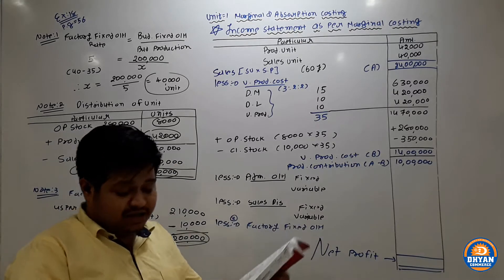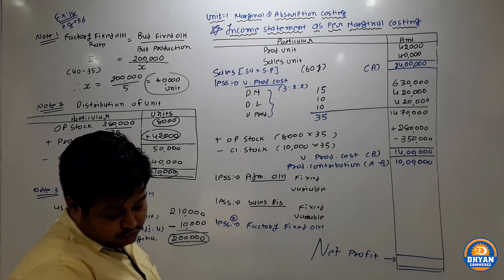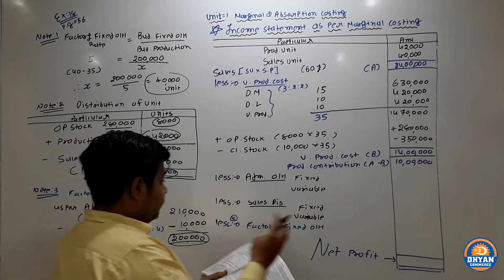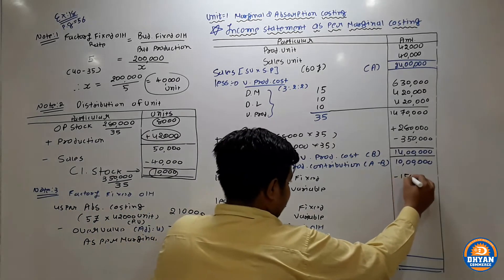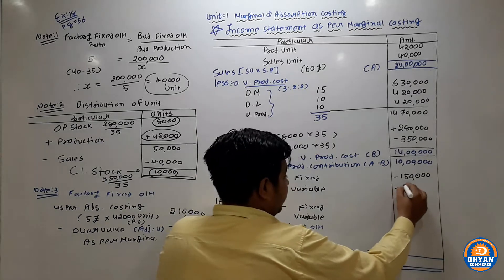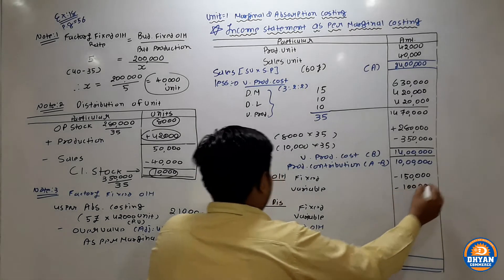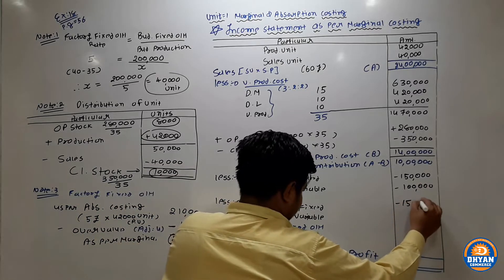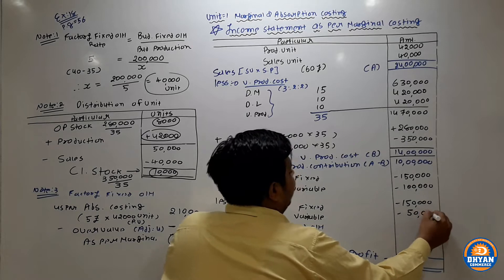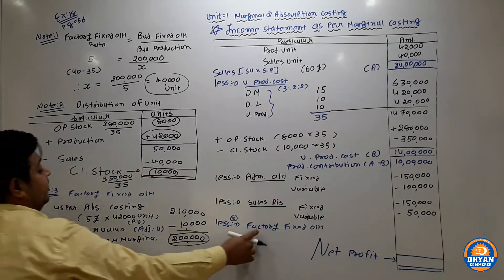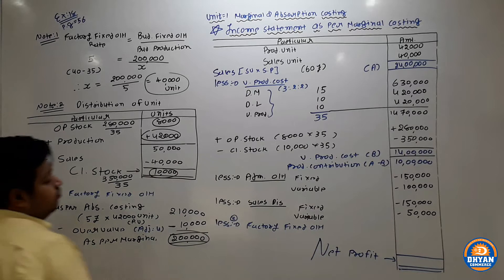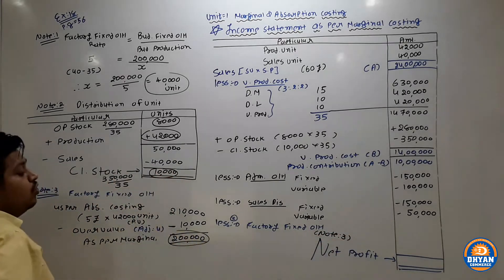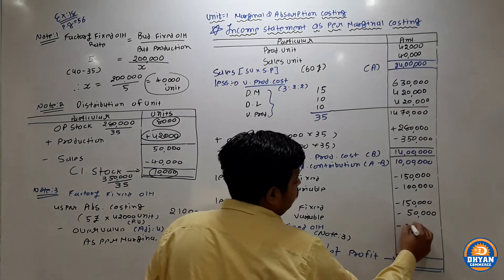Administrative and selling distribution costs are as given in the question. Fixed administrative cost is Rs. 50,000, which we write. Then we write selling and distribution fixed costs. These are subtracted from contribution to arrive at net profit in the marginal costing statement.